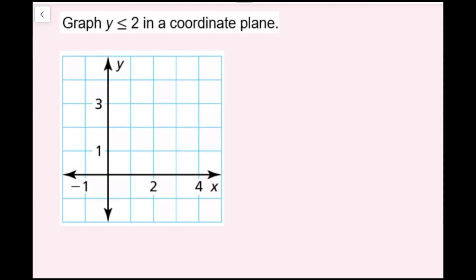For this example, we want to graph y is less than or equal to 2 in a coordinate plane. The line y equals 2 is a horizontal line — the slope is 0, there's no x term, and the y-intercept is 2. We have an equals here, which means I have a solid line. If it was just y is less than 2, I'd have a dashed line. So I'm going to start by graphing the line that goes with this inequality.